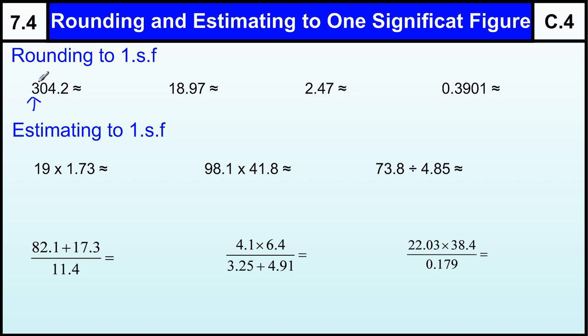So in this case that's this three, and then we think to ourselves that's three hundred, so we need to round it to the nearest hundred. So 304.2 to the nearest hundred is 300.